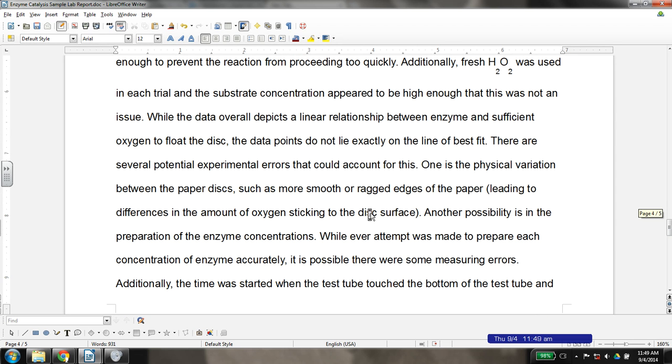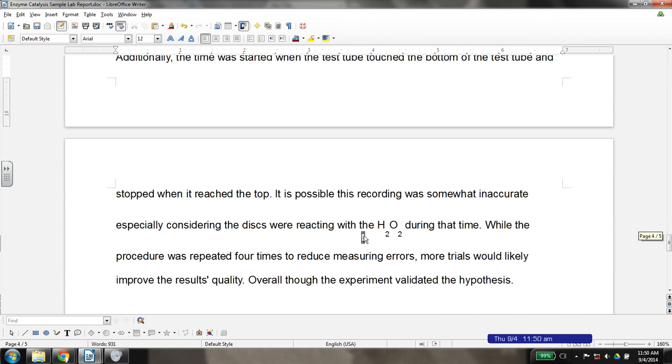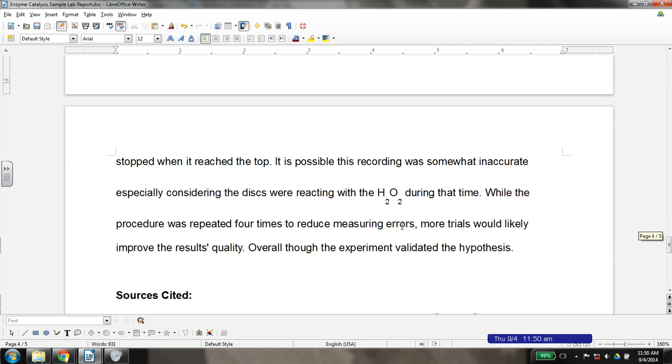you want to talk about what those sources of error were. For example, in this particular lab report, I noted the variation between the paper disc or the preparation of the enzyme solution. You will have specific sources of experimental error. But this is a place where you really should be brainstorming, going back to that lab and thinking about what are some things we did maybe we didn't do perfectly, and then thinking about how could we do those things better. And so, you want to, at the end of your lab report, talk about how you could produce better data.